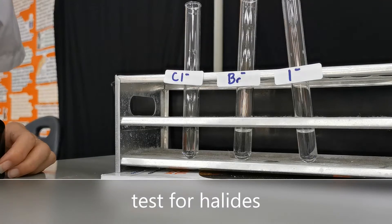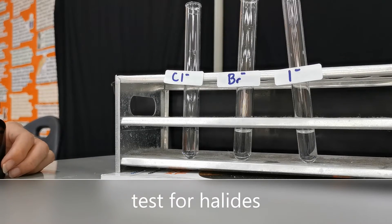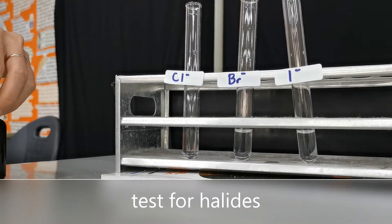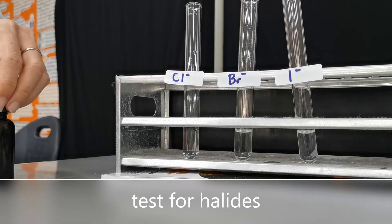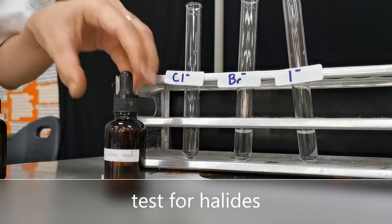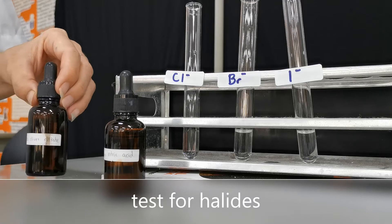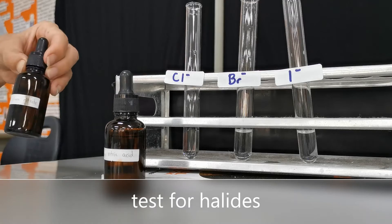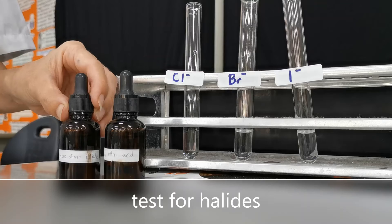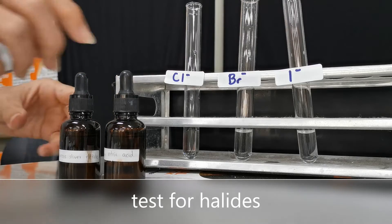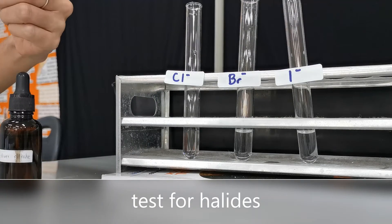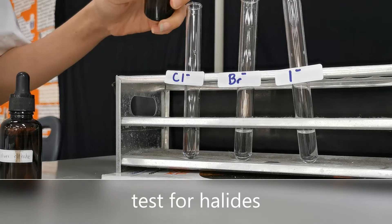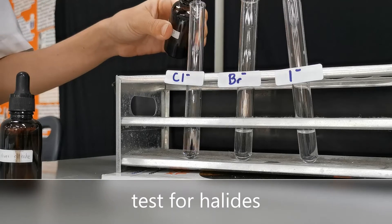The next test is to test for the presence of halides: chloride, bromide, and iodide. There are two reagents to use, and these are nitric acid to get rid of any carbonates, and silver nitrate. So let's first add nitric acid into each of our samples.